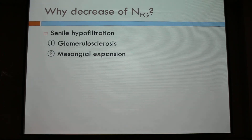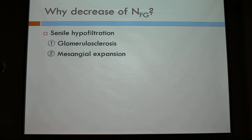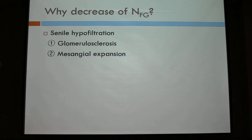Why does NFG decrease? This is due to senohypofiltration. There are two causes. First, glomerulosclerosis — meaning the glomerulus changes to fibrous tissue and disappears, leading to glomerular bypass circulation. And second, mesangial expansion — the mesangial cells form a thin membrane around the lumen, and when mesangial cells expand, it fills the lumen so the lumen gets smaller, leading to a decrease in GFR.